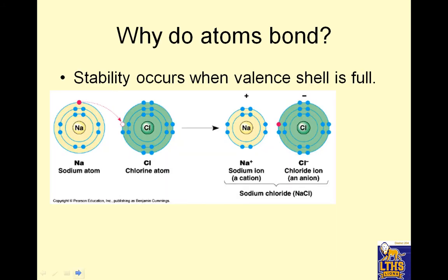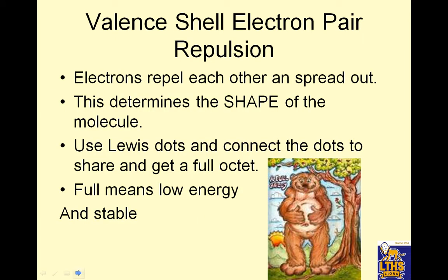Why do atoms bond? Stability occurs when the valence shell is full. That is lower energy. So bonds form to release energy. Why do atoms bond? To release energy. Stability occurs when your valence shell is full. So notice how sodium here has a full one. This one goes and fills up chlorine. And then the positive and negative like each other. That's one way to do it.